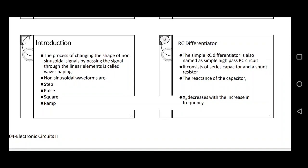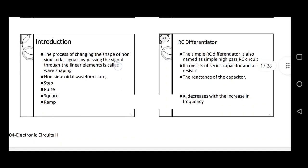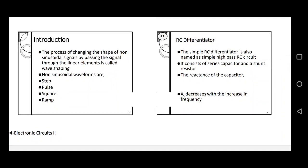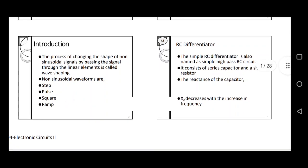Before starting the concept of RC Differentiator, we should see the introduction about wave shaping circuits. What is the definition of a wave shaping circuit? Wave shaping, as the name suggests, is when the shape of a wave is changed using some linear elements such as a diode. The process of changing the shape of non-sinusoidal signals by passing the signal through linear elements is called wave shaping. Examples of non-sine waveforms are step waveform, pulse waveform, square waveform, and ramp waveform.